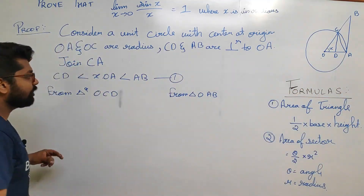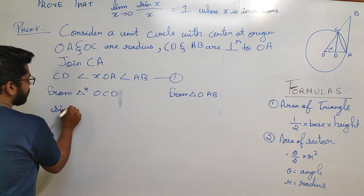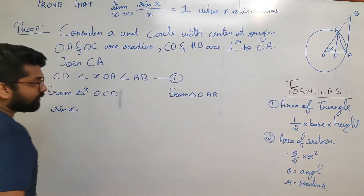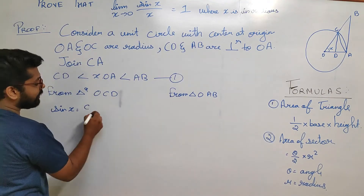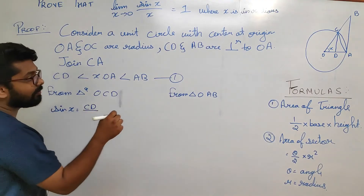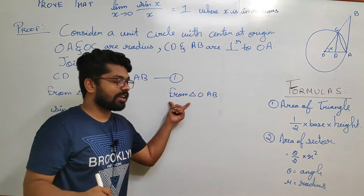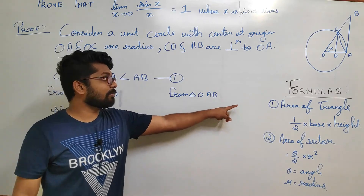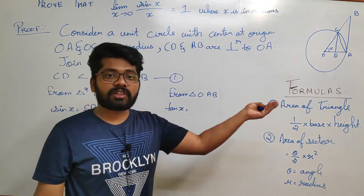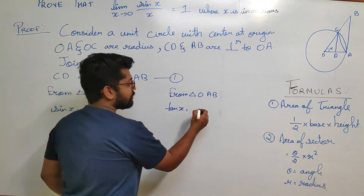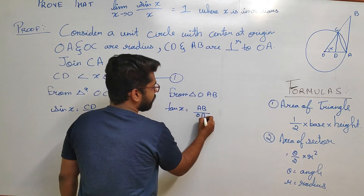From triangle OCD, we consider sin x: sin x = opposite over hypotenuse = CD over OC. From triangle OAB, we consider tan x: tan x = opposite over adjacent = AB over OA. Since OC = OA = 1 (unit circle), sin x = CD and tan x = AB over OA.